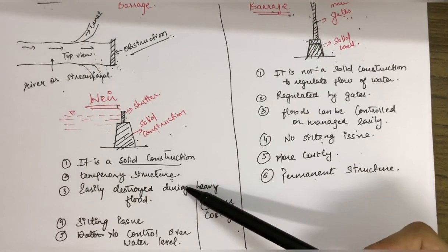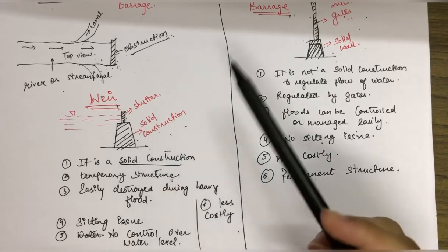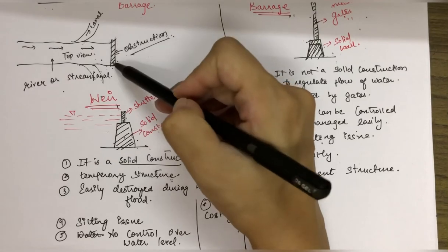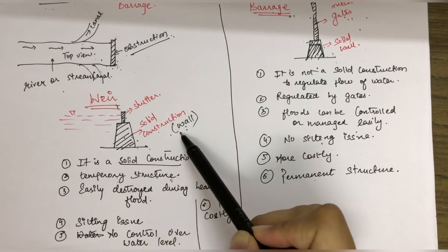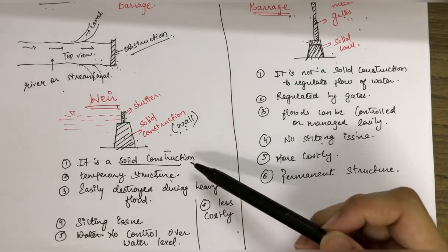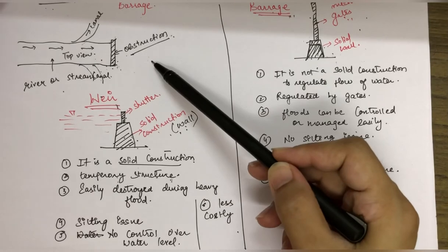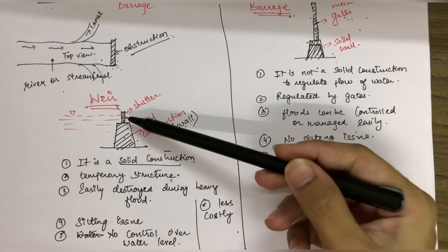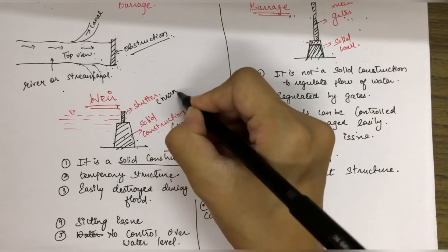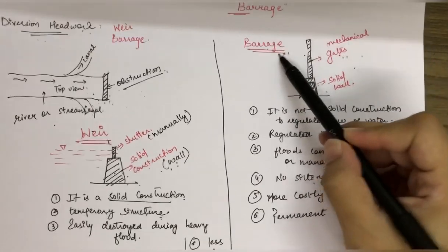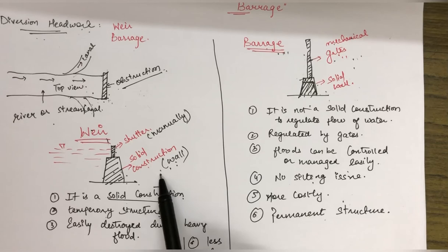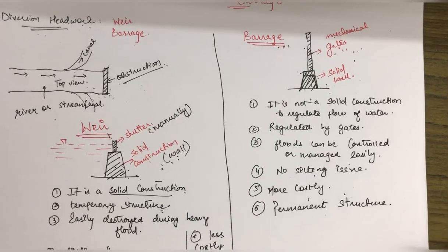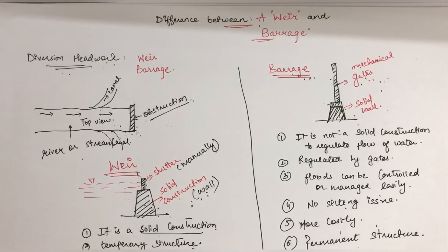If heavy rains or heavy floods occur, they can damage the wear and at some point it could get destroyed. Silting issue will remain, and during floods the shutters need to be manually operated. In case of barrage, mechanical gates can manage floods automatically. So barrage is more effective. The only downside is that it is more costly. I hope you are clear with the difference between wear and barrage, which are both a type of diversion headwork. Thank you.